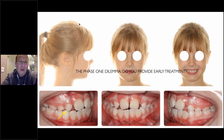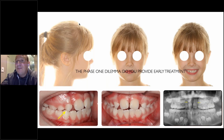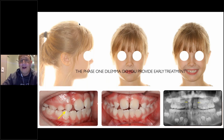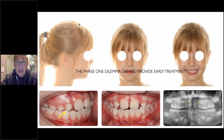The real debate is: if you have missing lateral incisors on a young patient and you think you are going to do a substitution case, and we have a little bit of dental protrusion, perhaps we'll do an upper sub or even an upper sub and a lower five extraction. Do you treat in phase one?